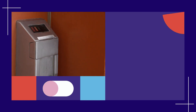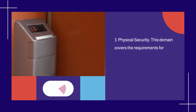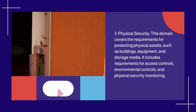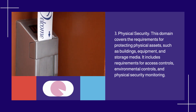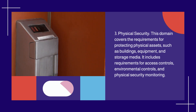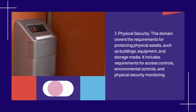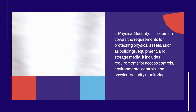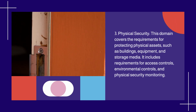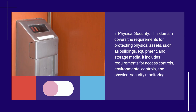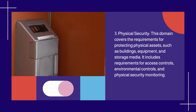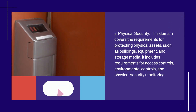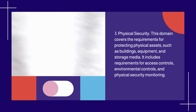3. Physical Security: This domain covers the requirements for protecting physical assets, such as buildings, equipment, and storage media. It includes requirements for access controls, environmental controls, and physical security monitoring.